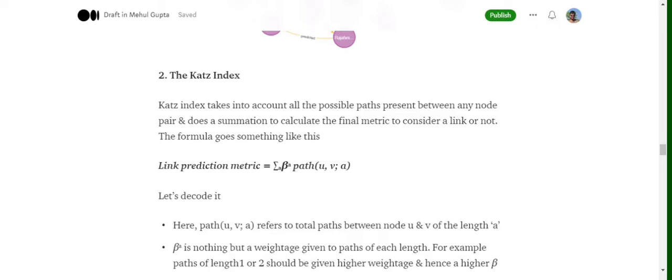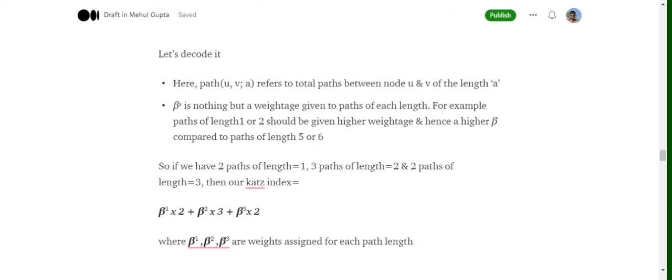For example, assume that there are two nodes U and V which have three possible paths. As you can see in the example, there are two paths of length 1 and three paths of length 2 and two paths of length 3 between two nodes U and V. Now our Katz index will be beta^1 times 2 plus beta^2 times 3 plus beta^3 times 2.